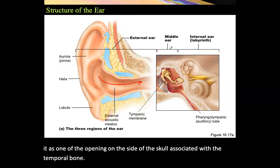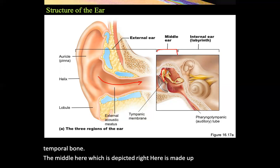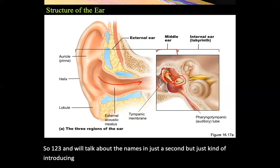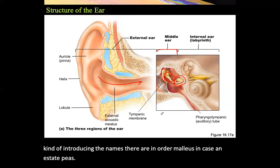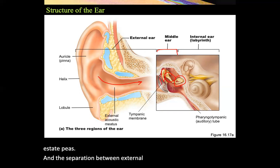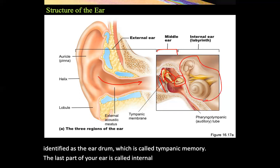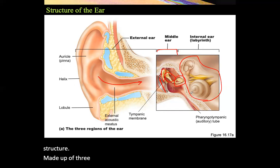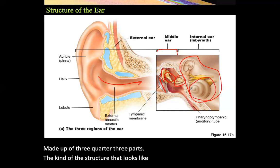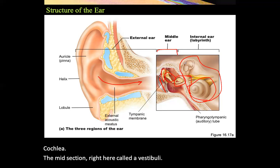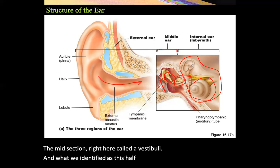The middle ear is made up of three bones: in order, the malleus, incus, and stapes. The separation between the external and middle ear is the eardrum, called the tympanic membrane. The last part of the ear is the internal or inner ear, made up of three parts: the cochlea, which looks like a snail shell; the midsection called the vestibule; and three semicircular canals.